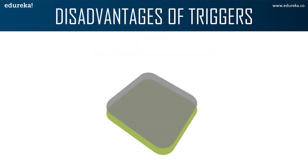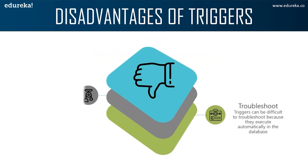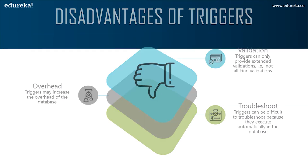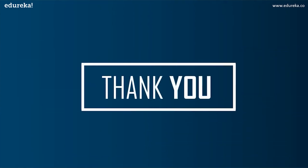The disadvantages of a trigger are: triggers can only provide extended validation — not all kinds of validations. For simple validations, you cannot use NOT NULL, UNIQUE, CHECK, and FOREIGN KEY constraints in a given trigger. Next, triggers may increase the overhead of a database. Finally, triggers can be difficult to troubleshoot because they execute automatically in the database and may not be visible to client applications. This brings us to the end of this session on triggers in SQL. I hope you understood the concepts of triggers. Thank you and have a great day.